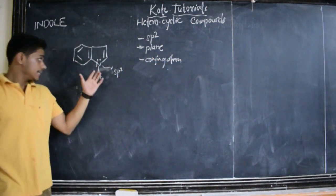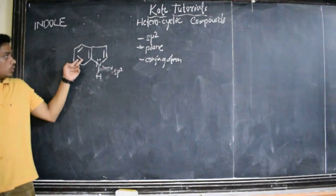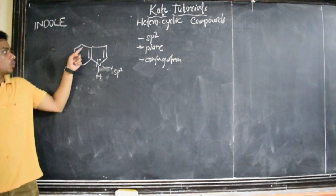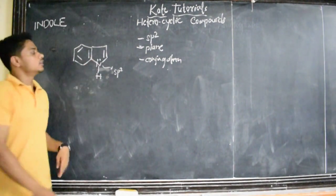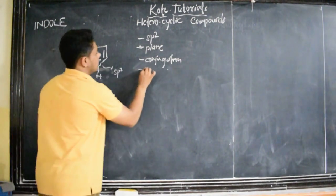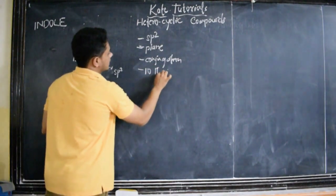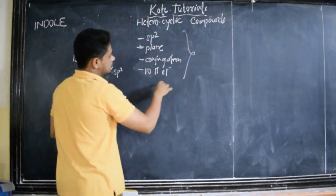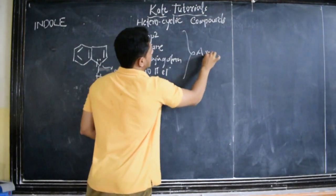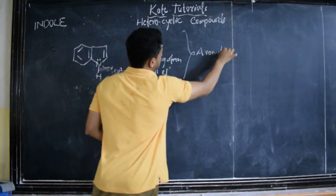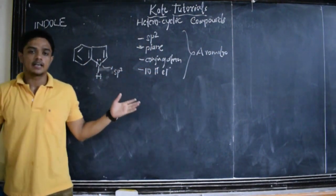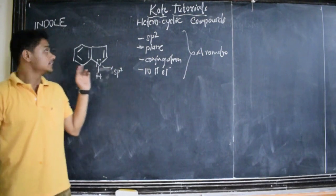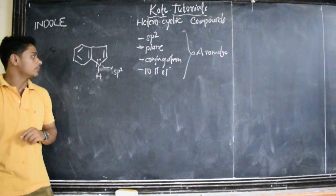Moreover, counting the electrons: 2, 2 electrons, 2 electrons, 2 pi electrons — that gives us 2, 4, 6, 8, 10. We have got 10 pi electrons. Hence, from all these four points, the compound is aromatic. Since the compound is aromatic, it should be more stable. Hence, indole is more stable.